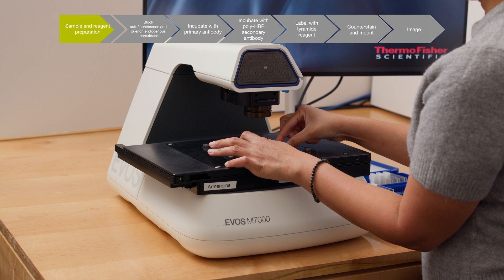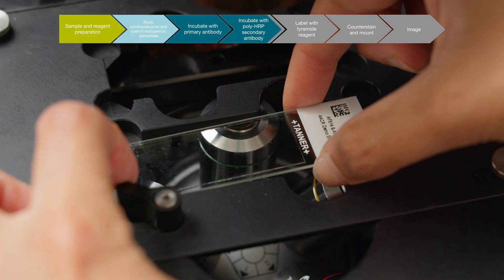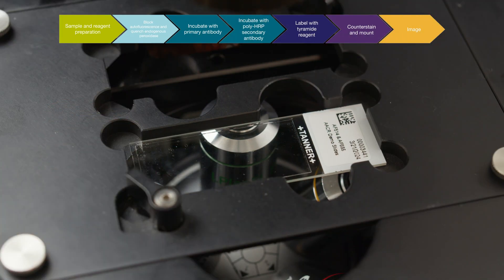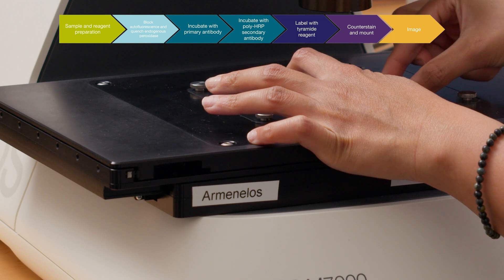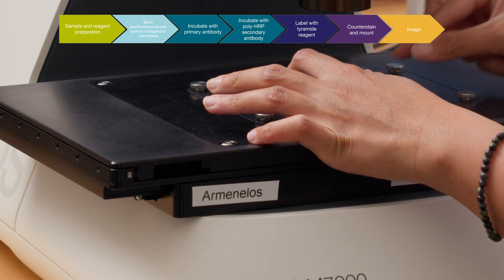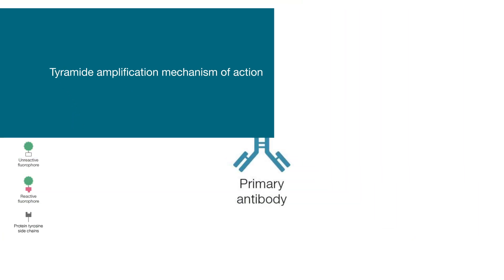This video will demonstrate how to use the Tyramide SuperBoost kits for staining tissue, starting from an unlabeled FFPE tissue sample on a slide. The labeled tissue will then be ready for imaging on any type of fluorescence microscope.